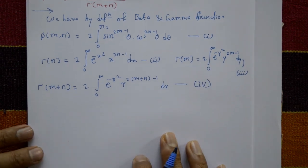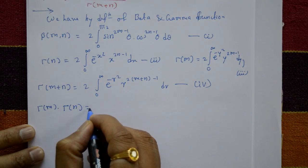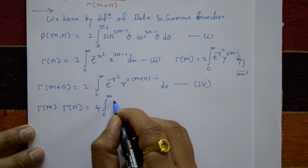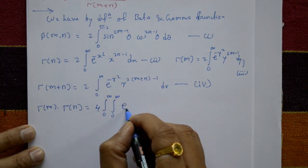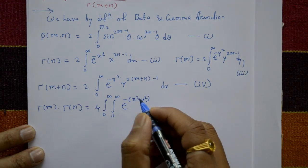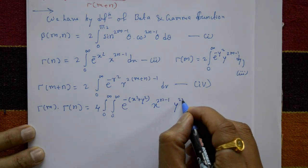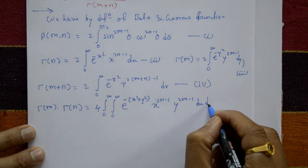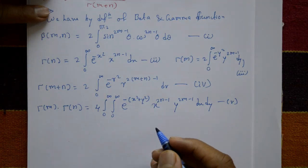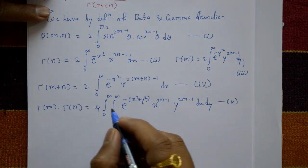Now, Gamma(m) times Gamma(n) equals 2 times 2, which is 4, times the double integration from 0 to infinity and 0 to infinity of e to the power minus (x² + y²) times x raised to (2n−1) times y raised to (2m−1) dx dy. This is equation number 5. Now we take only the right-hand side of equation 5 and change it into polar form.